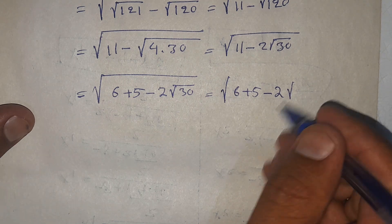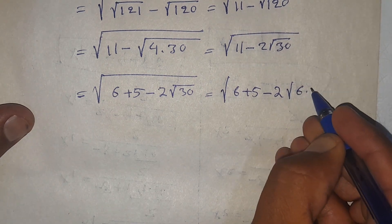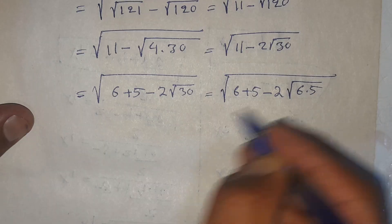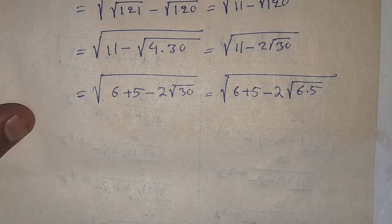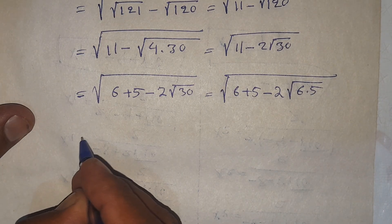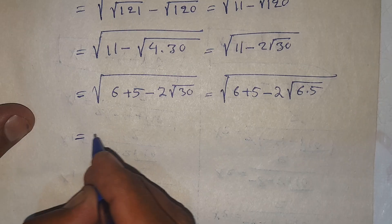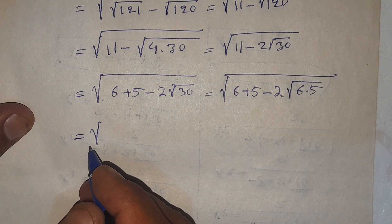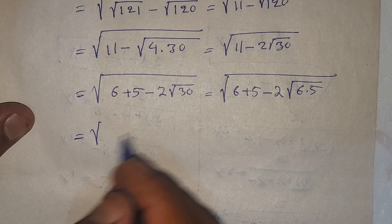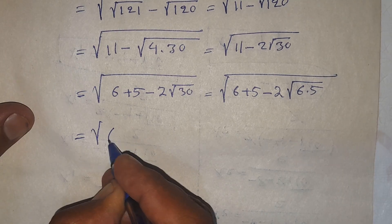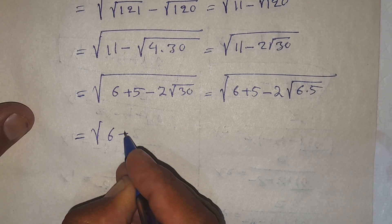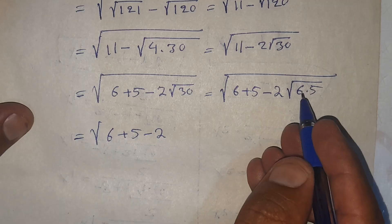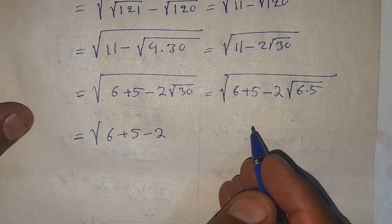Instead of square root of 30, it can be written as square root of 6 times 5. So this equals square root of 6 plus 5 minus 2 times square root of 6 times 5.